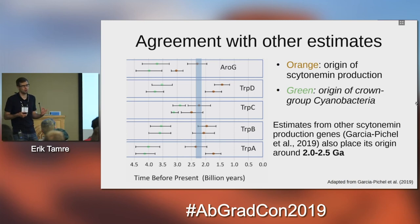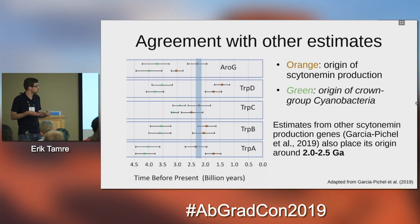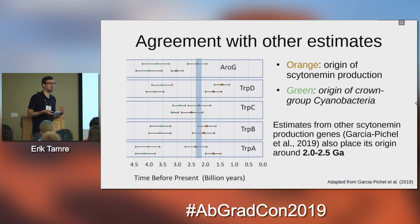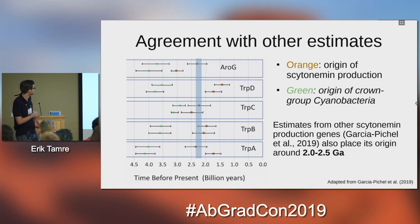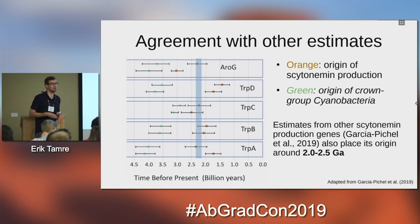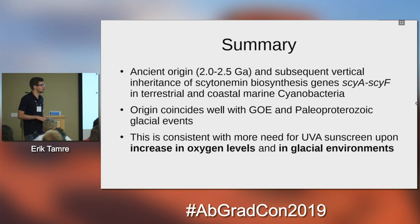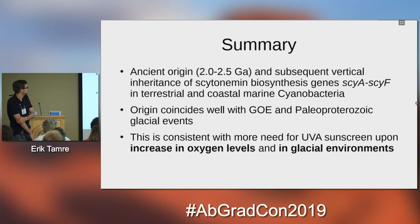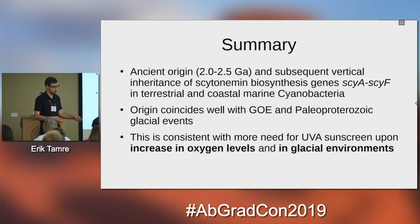This timing is interesting not just for scytonemin and understanding UV radiation protection, but also more generally for understanding when cyanobacteria developed and when important evolutionary events concerning them happened. Here is a set of estimates from the same molecular clocks for the time of origin of crown group cyanobacteria — again quite a bit of variation, but a clear consensus that this happened well before the GOE. To recap: it does look like the relevant biochemical pathway arose about 2–2.5 billion years ago in some common ancestor of what are today mostly terrestrial cyanobacteria, and has been vertically inherited since.